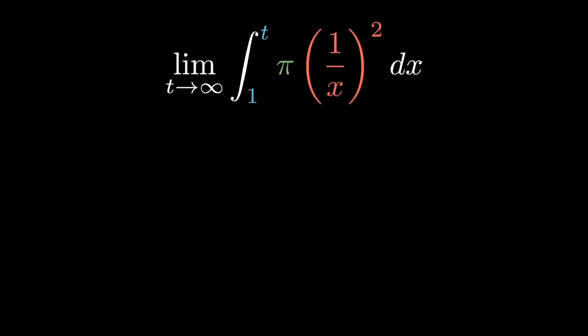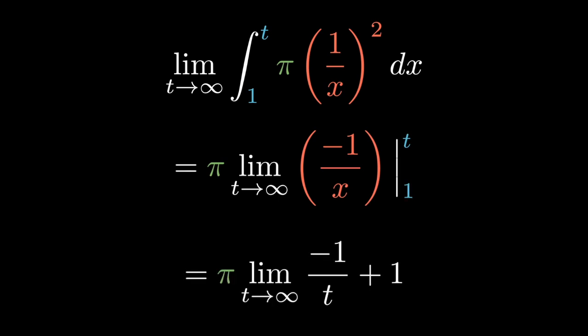Evaluating the integral, we get -1/x from x = 1 to x = t, which results in the limit as t approaches infinity of -1/t + 1 times π.